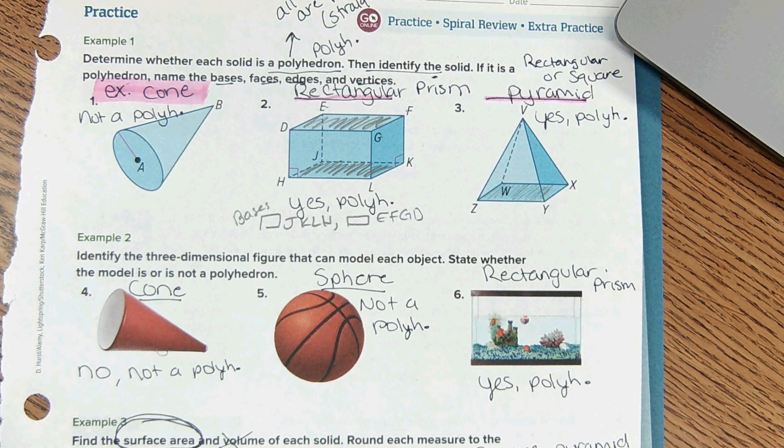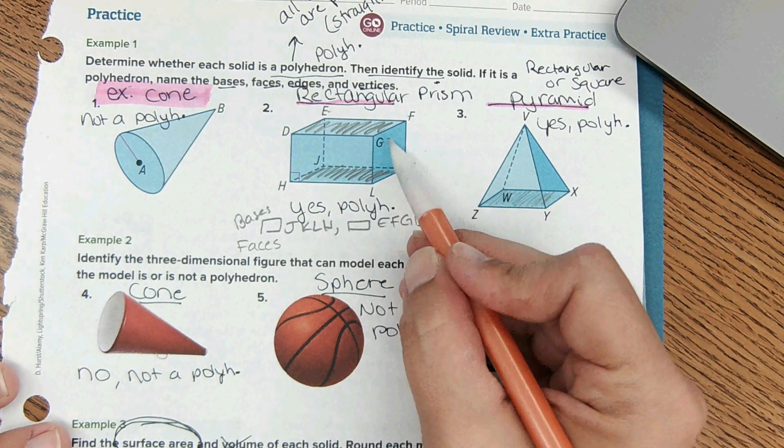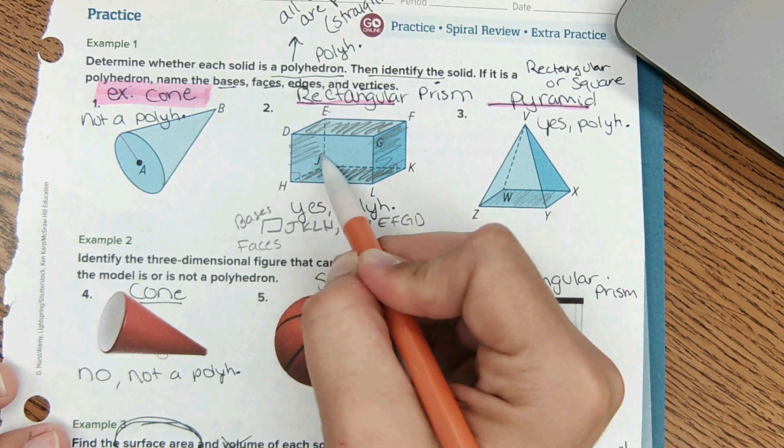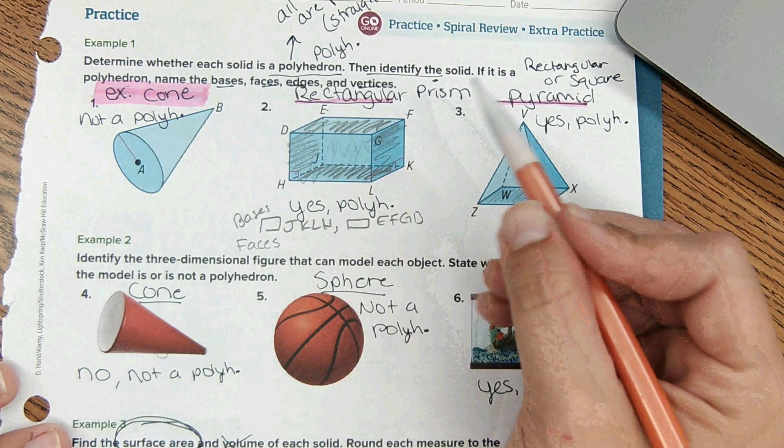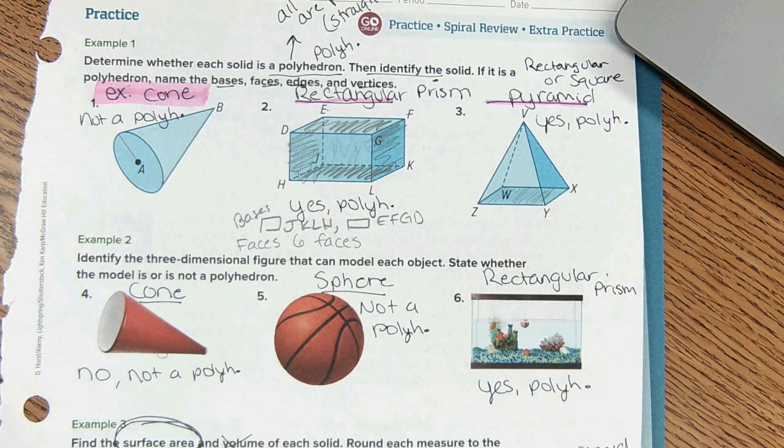Then it says faces. Faces are literally all the different polygons on the side. So there's a face right here, there's a face right here, there's a face in the front and on the back. There's a total of six faces. We could name them all but that would take us all day, so we'll just say there's six faces.